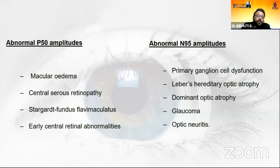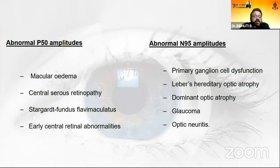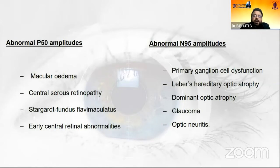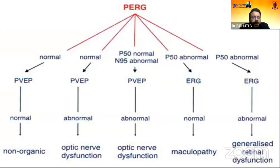Abnormal P50 amplitudes occur in any macular pathology — such as macular edema, central serous retinopathy, Stargardt disease, etc. An abnormal N95 would be seen in primary ganglion cell dysfunction, Leber hereditary optic neuropathy, hereditary optic atrophy, any other genetic optic atrophy, glaucoma, optic neuritis, etc.